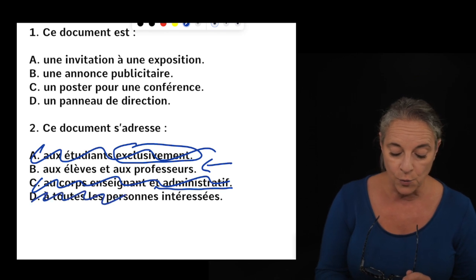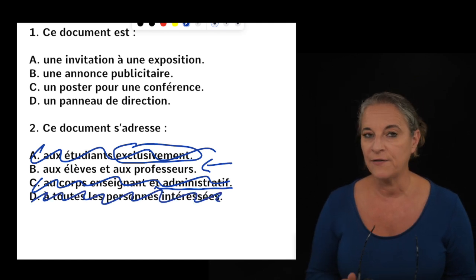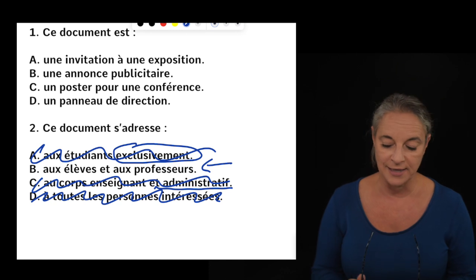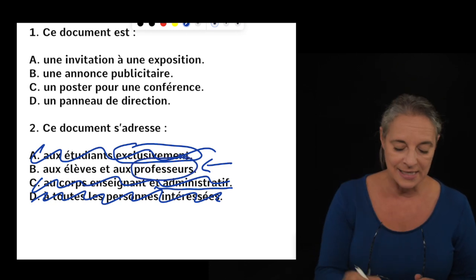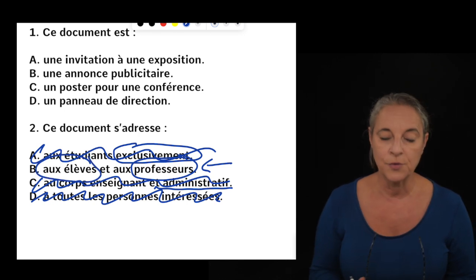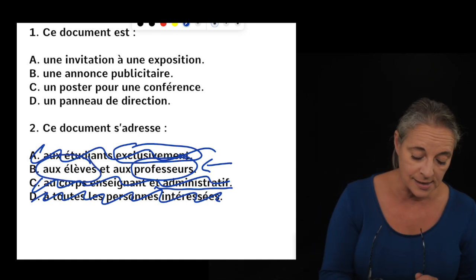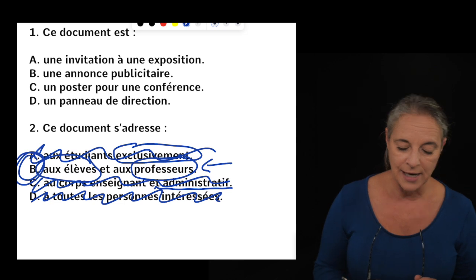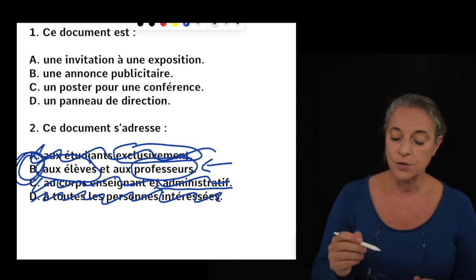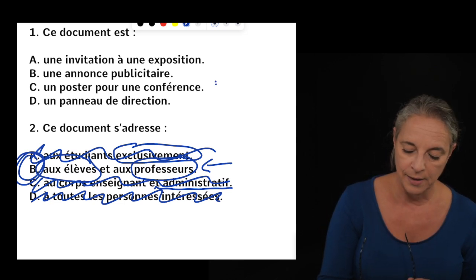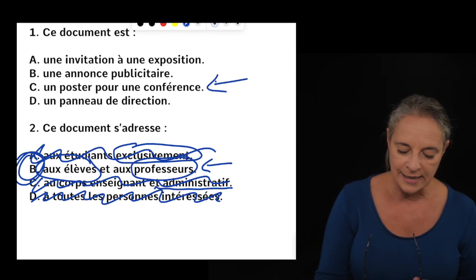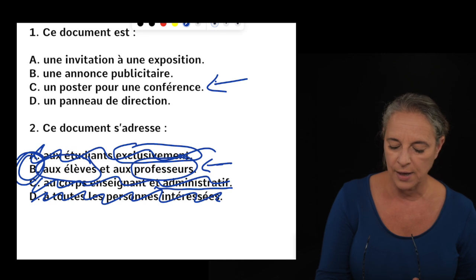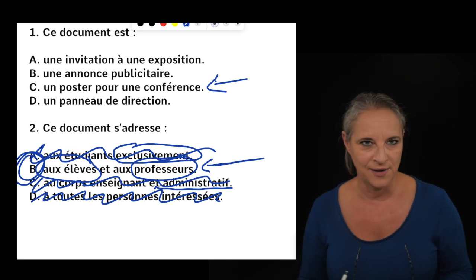Is it à toutes les personnes intéressées? To all interested people? Well, no. We have two kind of people invited here. Les enseignants, as in professeurs, et les étudiants, as in pupils, les élèves. So this can only be B as an answer. So, ce document est un poster pour une conférence et il s'adresse aux étudiants et aux professeurs.